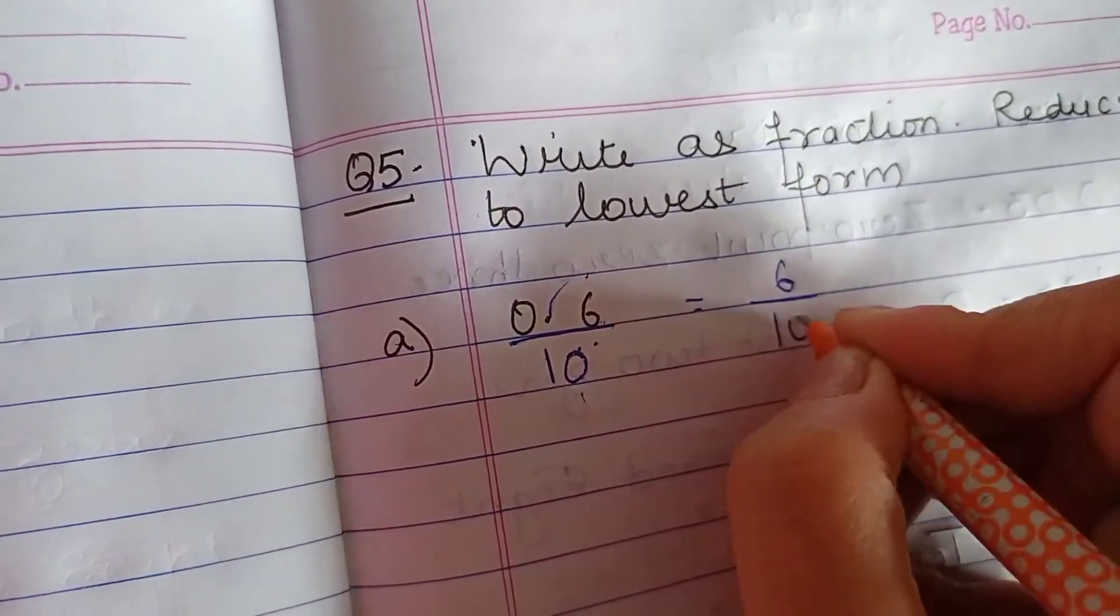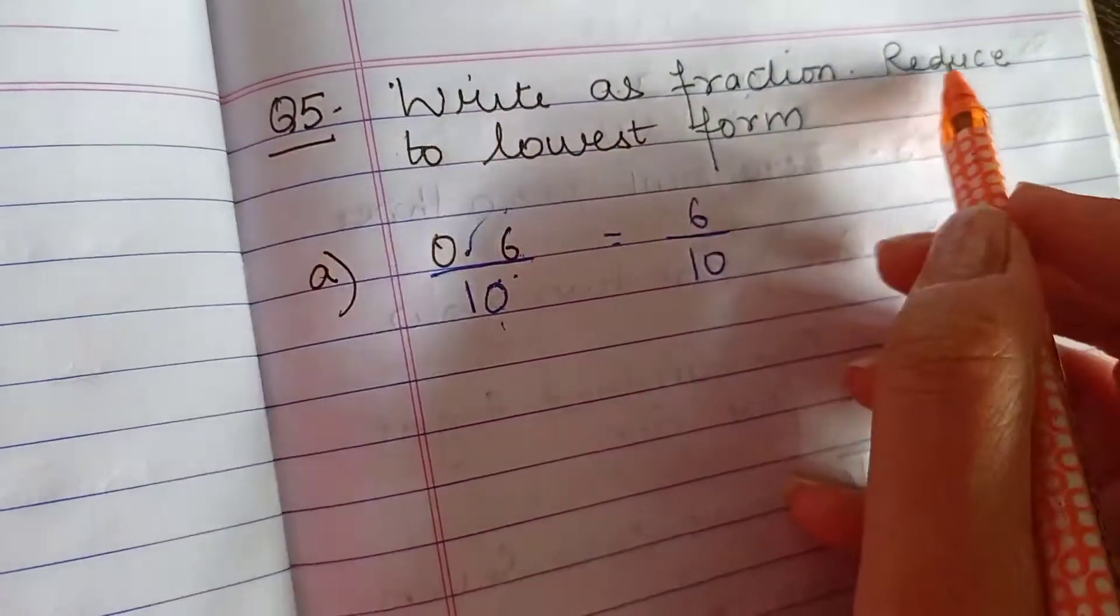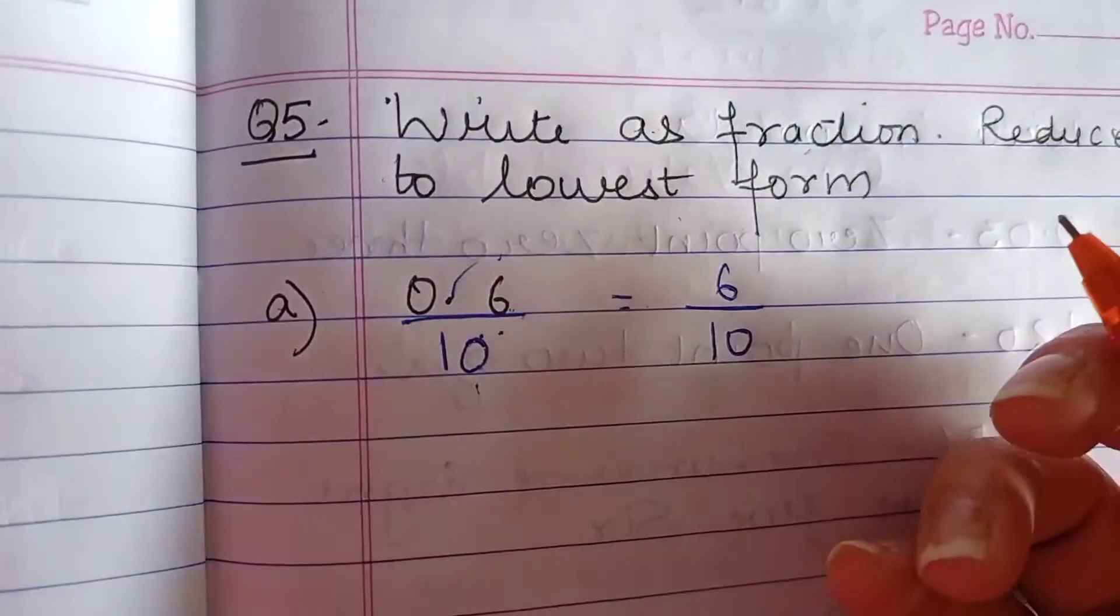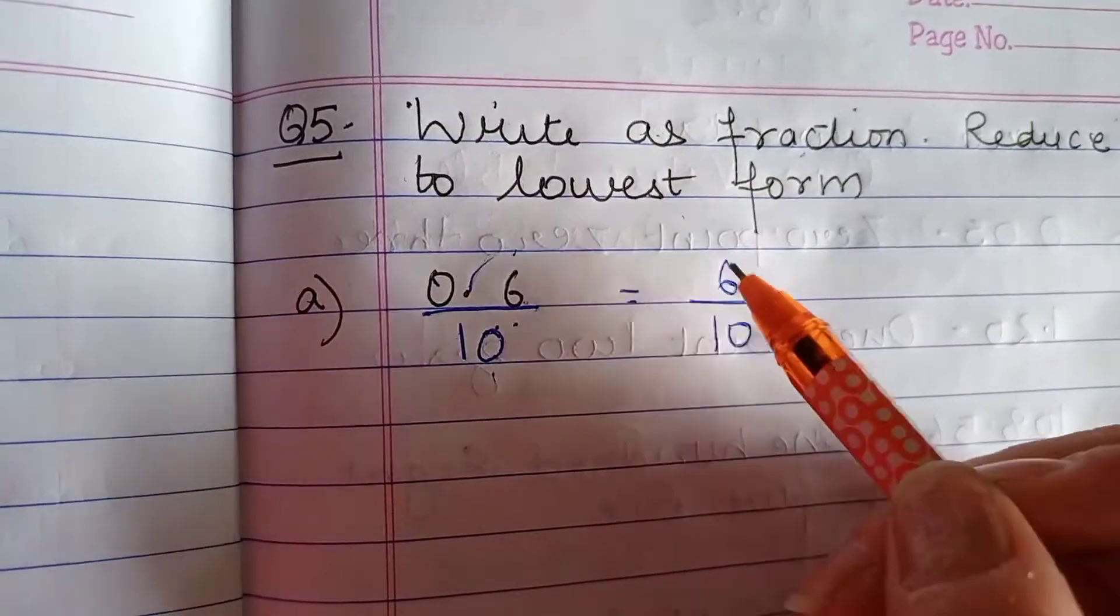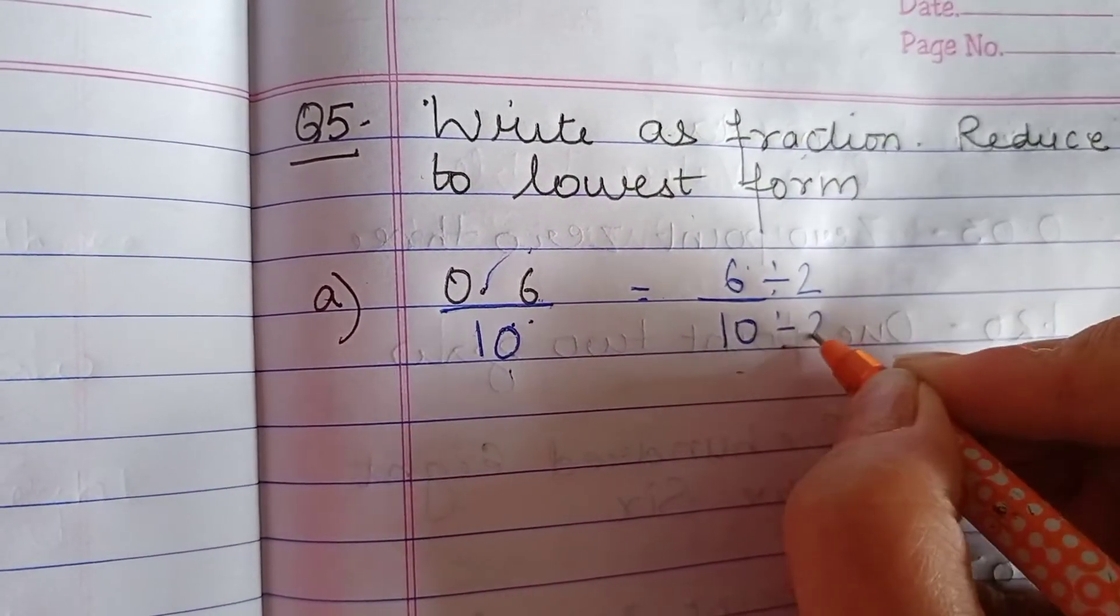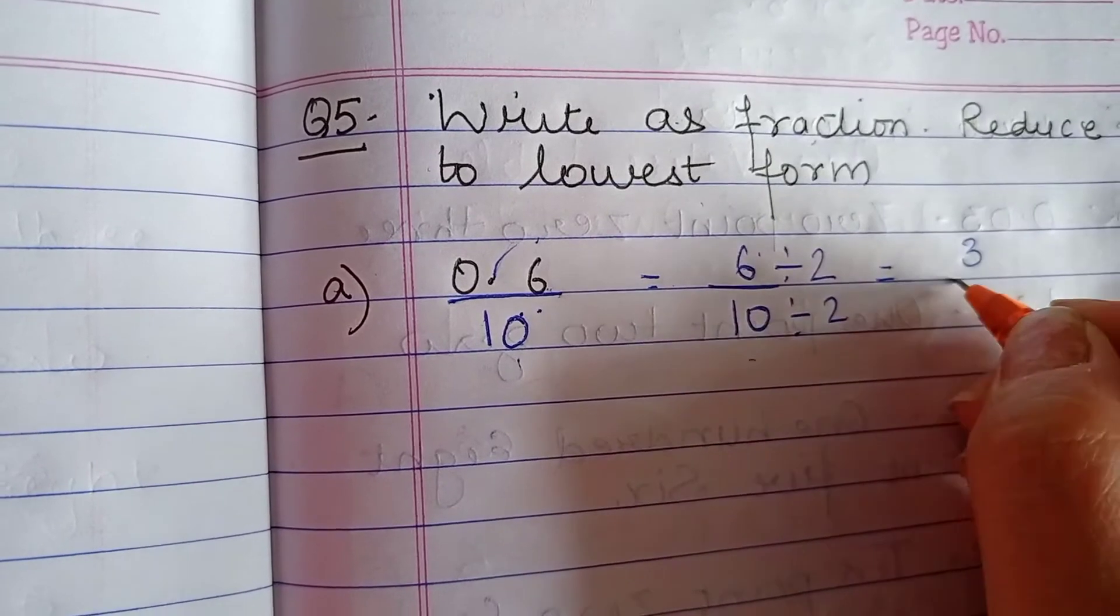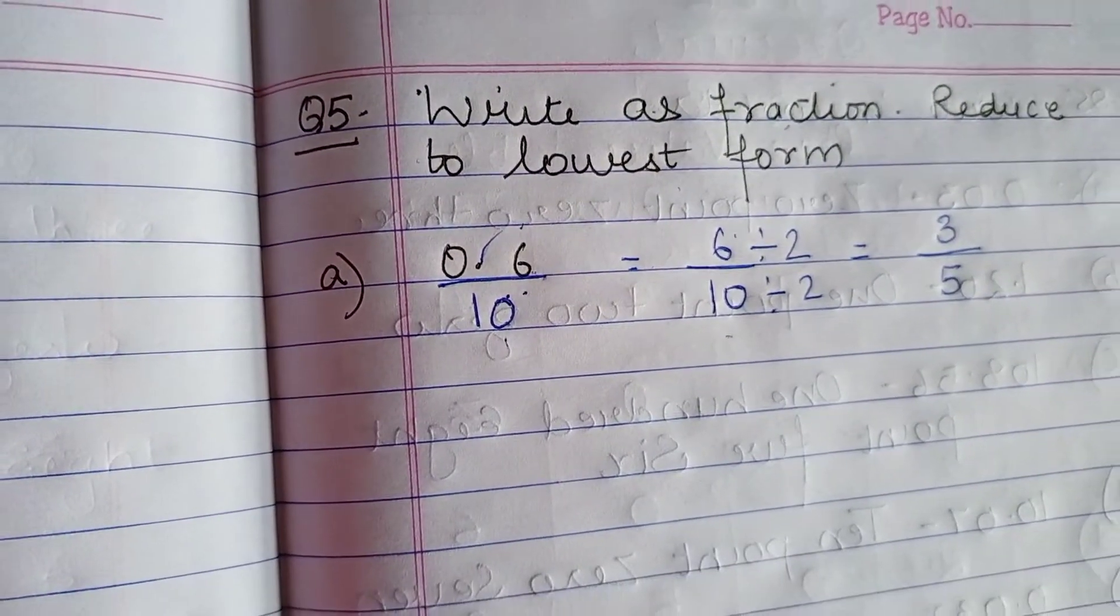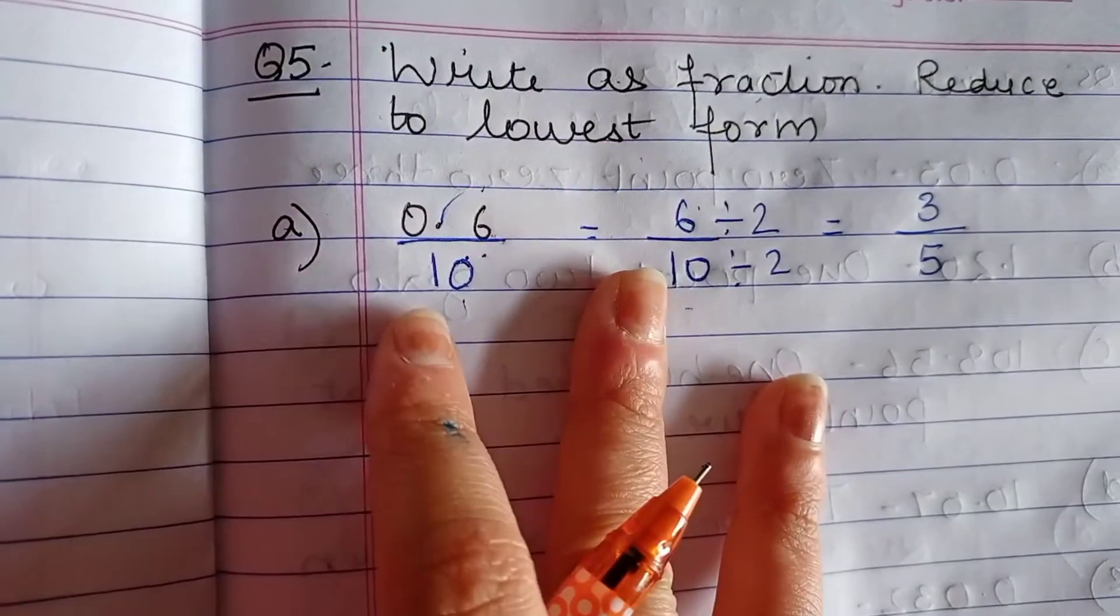Now this is our first part done, to write as fraction. Now we have to convert it into lowest form as you have remembered in chapter fraction we did it. This can be divisible by 2. Both numbers come in the table of 2. 6 divided by 2 is 3 and 10 divided by 2 is 5. So this will be our answer 3 upon 5.